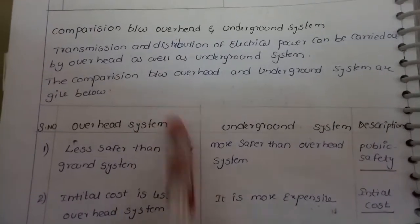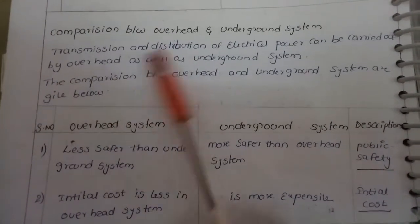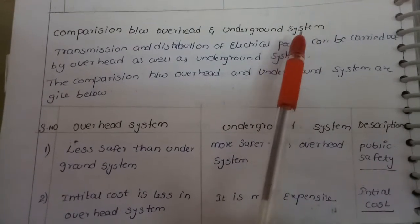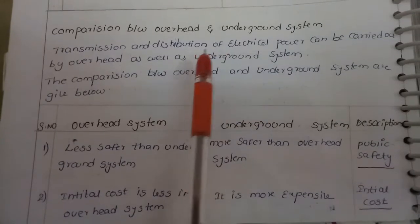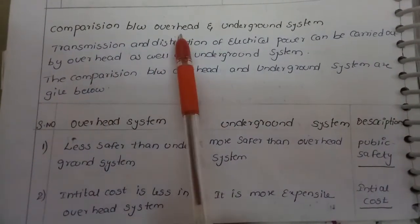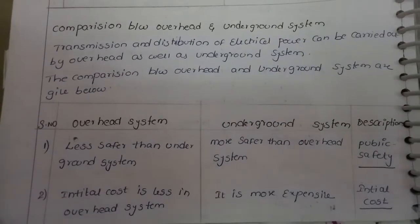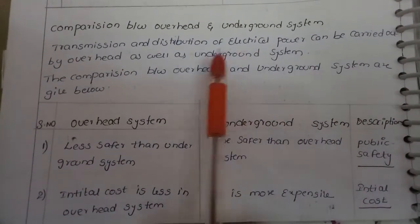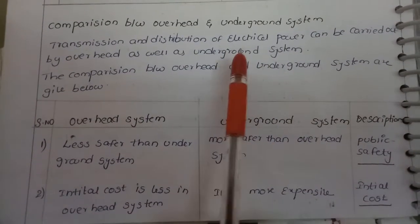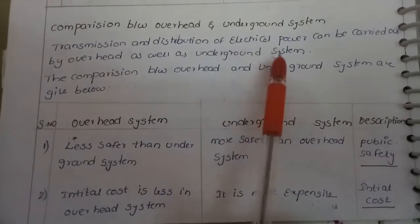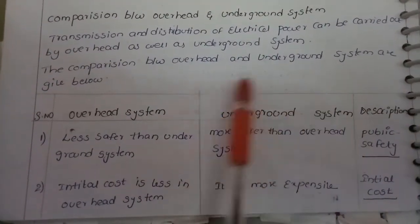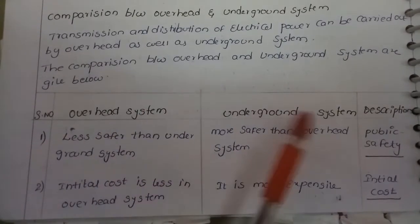Let us discuss the comparison between overhead versus underground distribution systems. In the last session we discussed the comparison between primary and secondary distribution systems. The transmission and distribution of electric power can be done through overhead as well as underground systems; both are followed in India.